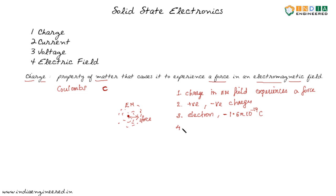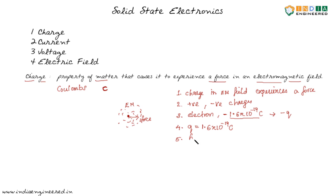In solid state, we will be dealing with the value 1.6 into 10 power minus 19 coulombs frequently. We will associate it with small letter q. During the lectures, we will be using small letter q with value equal to 1.6 into 10 power minus 19 coulombs, which is also the charge of a hole.